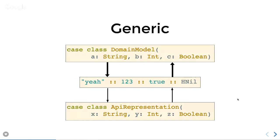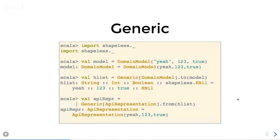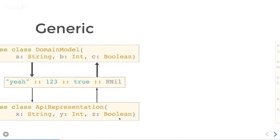To do that in Shapeless it looks like this. You import shapeless._, you have an instance of your DomainModel case class, and you summon an instance of the Generic type class for DomainModel — `Generic[DomainModel]`. On that type class instance you call the `to` method, passing in your case class instance, and it gives you back the generic representation — the HList. Once you've got the HList you can go back the other way: summon Generic for APIRepresentation, call `from`, pass the HList in, and it gives you back the case class.